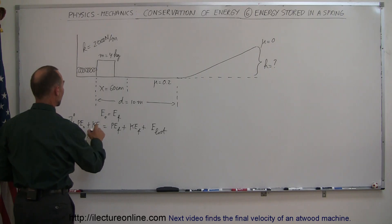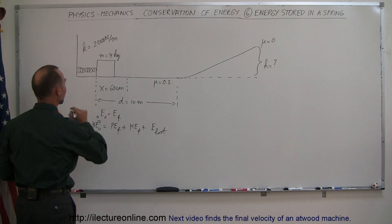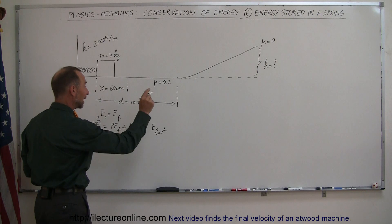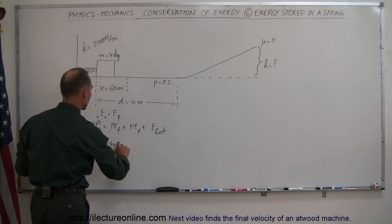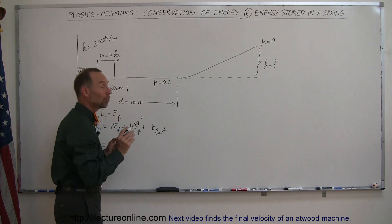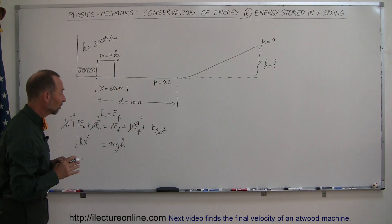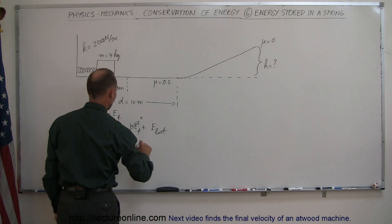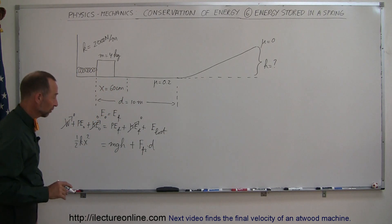Kinetic energy initial, we have none because it's not moving at that point. Potential energy final, we do have because we gain height, so it will be mgh. Kinetic energy final would be 0 because it's not moving at the very end when it reaches its maximum height. And energy lost will be there, it's the friction force times the distance along that path where there's friction.